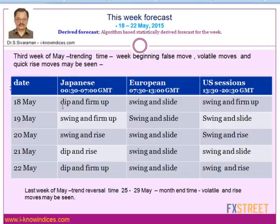Today, the 18th of May, they are expected to make a dip and small firm-up move during the Japanese session, followed by a swing and slide. The slide could be deeper during the European session as the week-beginning false move — it can be a drop — and that is a good buy opportunity. Afterwards they will make the swing and firm-up move during the US session. Tomorrow, the 19th of May, they are expected to make the swing and firm-up move, and again make a slide during the European and US session.